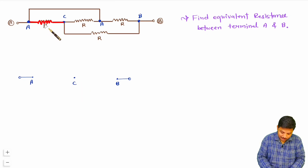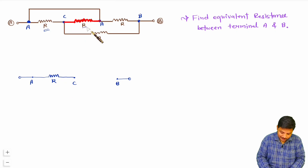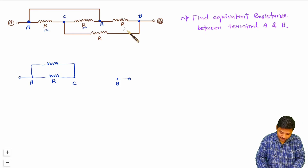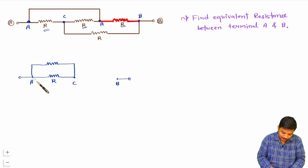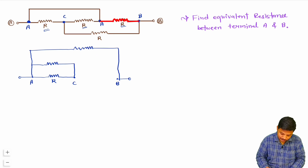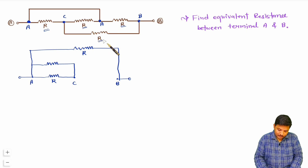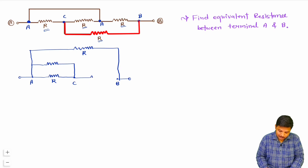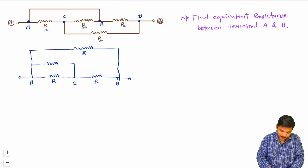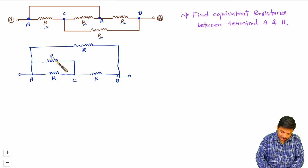Now I redraw this circuit with terminals A, B, and C — placing C between A and B. The first resistance R is between A and C, so I draw it there. The second resistance R is also between C and A, so I draw that in between A and C as well. The third resistance R is between A and B, so I draw it between A and B. The fourth resistance R is between B and C, so I draw it between B and C.